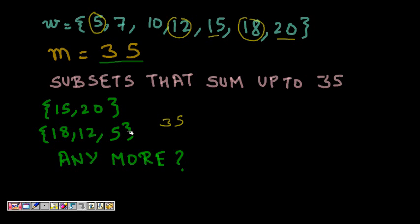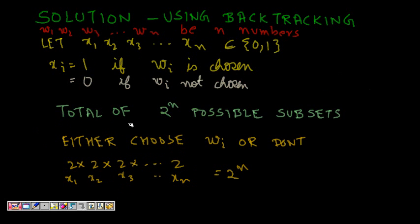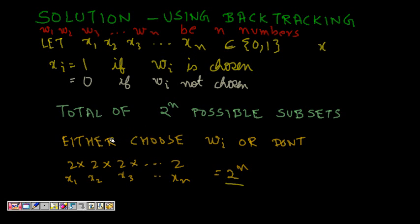Mathematically, we are given numbers w1, w2, w3, ..., wn and we represent the solution as a vector x1, x2, ..., xn where each xi is either 0 or 1. A 0 means we have not chosen that number in the subset, and 1 means we have. There are 2^n total possibilities to check for valid ones.